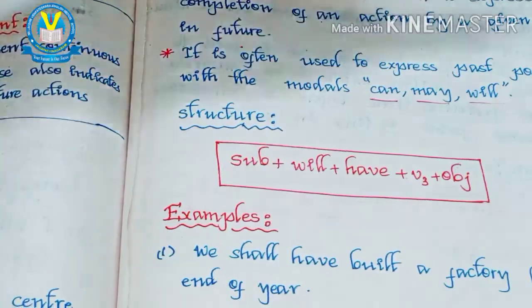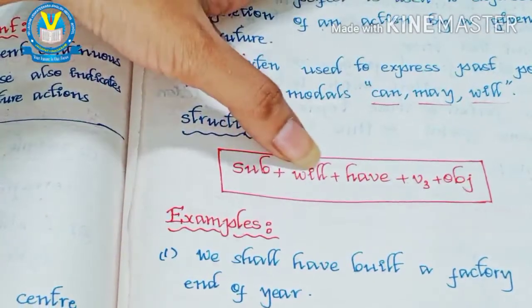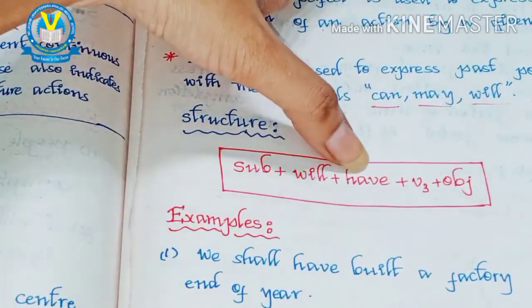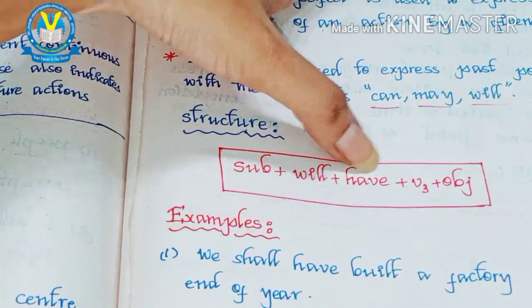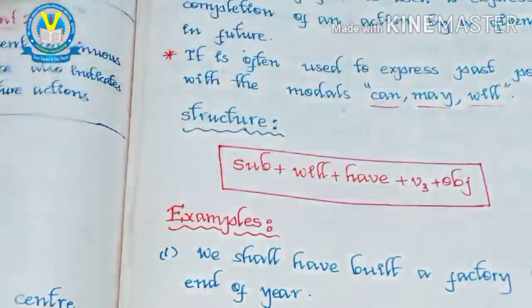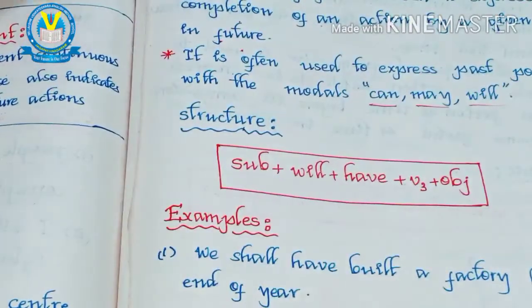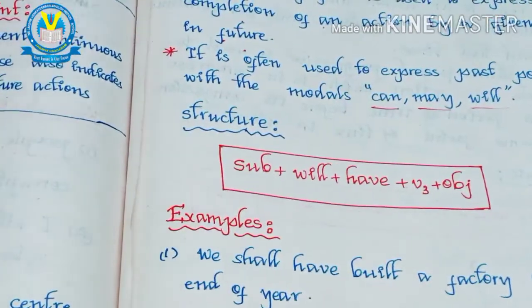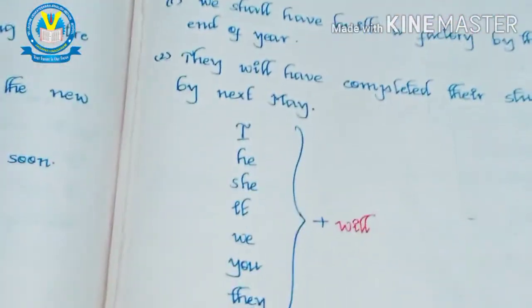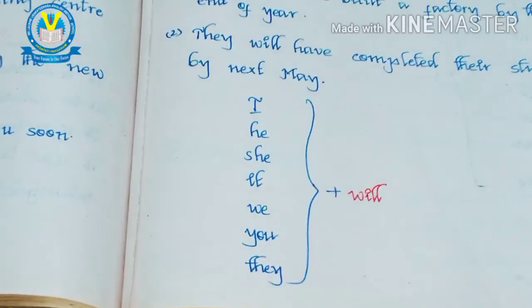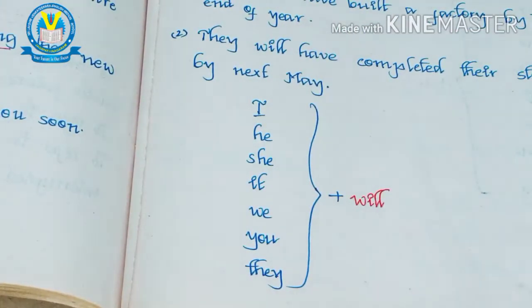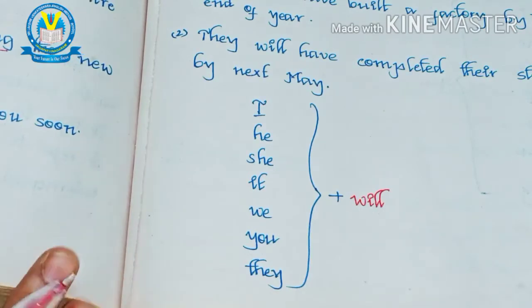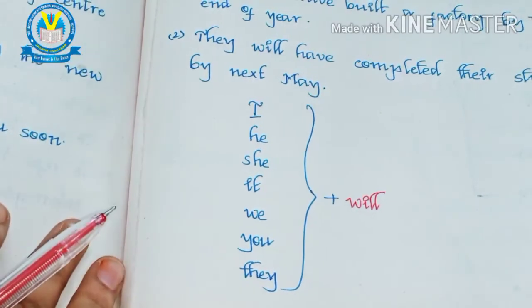Now look at the structure. The formula is: Subject + will + have + verb (third form) + object. The auxiliary 'will' is used for all subjects: I, he, she, it, we, you, and they. We use 'will' for all these conditions.